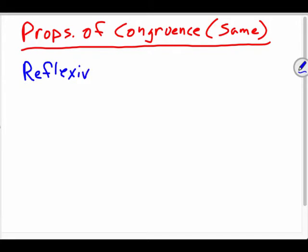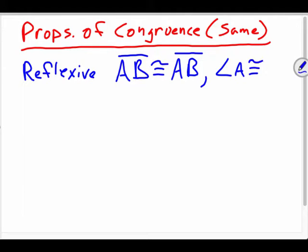But reflexive... This is before example two. So this might seem kind of silly, but what we're saying is that the length of line segment AB is equal to the length of line segment AB. It's congruent, actually. It's not equal, it's congruent. It also means that angle A is congruent to angle A, and we call that reflexive.